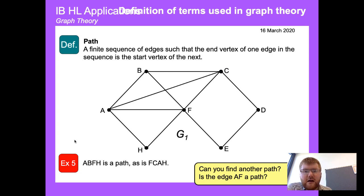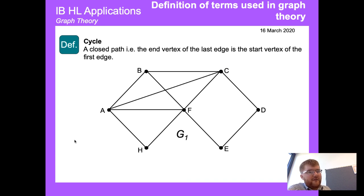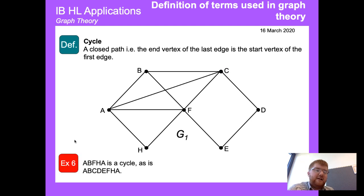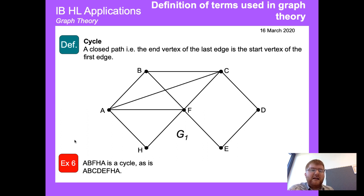Think about whether the single edge A-F counts as a path. A cycle, however, is a closed path — it makes a full circuit. For example, A-B-F-H-A is a cycle, and A-B-C-D-E-F-H-A is also a cycle, but it has to close — that's the key idea.